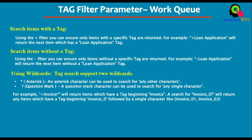A question mark can be used to search for any single character. For example, 'invoice_0?' will return items which have a tag beginning with 'invoice_0' followed by a single character — like 'invoice_01', 'invoice_02', or any single character such as a, b, c — but only one single character.